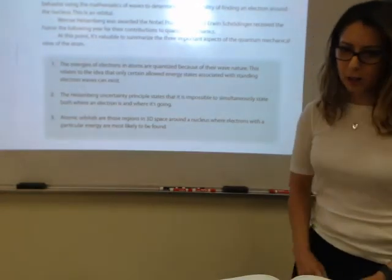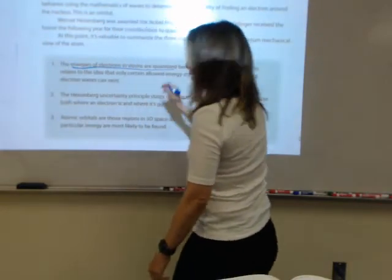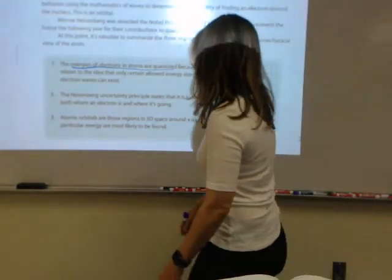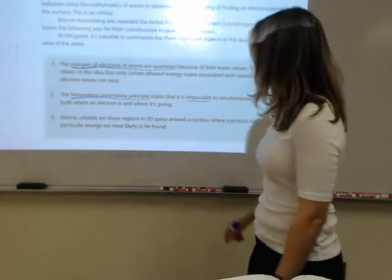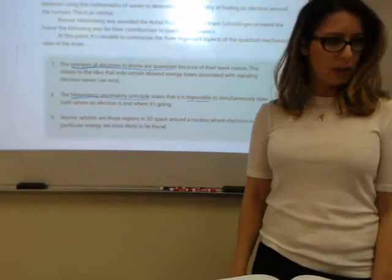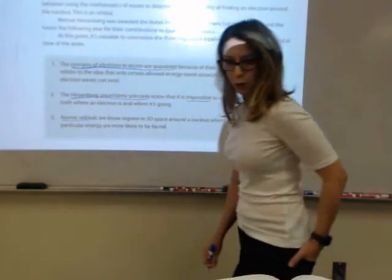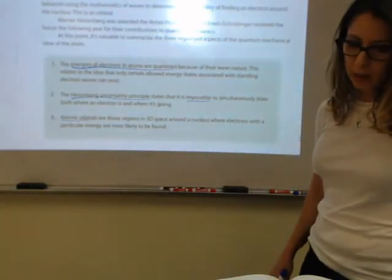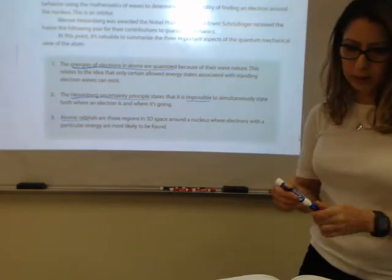So at this point let's summarize some important aspects of the quantum mechanical view of the atom. Number one, the energies of electrons in atoms are quantized. Number two, the Heisenberg uncertainty principle says that it is impossible to simultaneously state where an electron is and where it's going. And number three, atomic orbitals are those three-dimensional regions in space that are around the nucleus where the electrons are likely to be found.